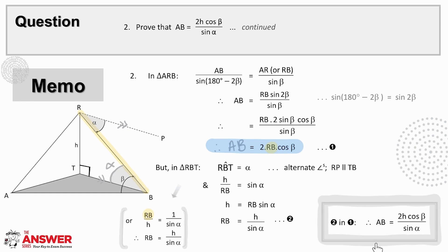The final step in this question is then to substitute this expression for RB into the equation we found for AB and as you can see here the outcome is exactly what we were asked to prove.